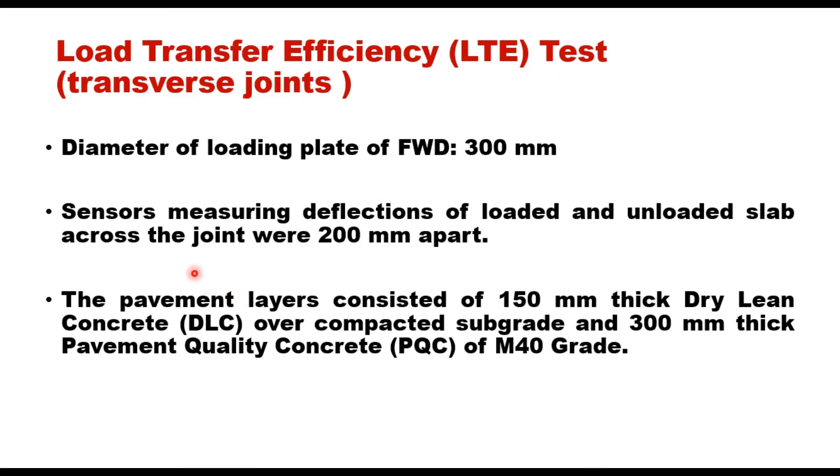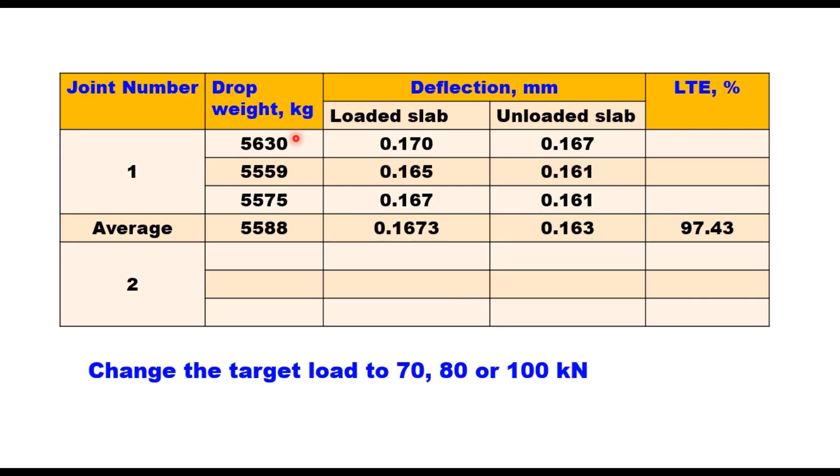Let me take one example just to illustrate how do we find the load transfer efficiency. Let us say we are testing transverse joints means the efficiency of dowel bars. And diameter of loading plate is 300 mm as usual. Sensors measuring deflections of loaded and unloaded slab across the joint were 200 mm apart. Means no correction factor is required. The pavement layers consisted of 150 mm thick DLC over compacted subgrade and 300 mm thick PQC of M40 grade. And when you take the observations using FWD, you get this kind of data. Drop weight 56.3 kN or 5630 kg.